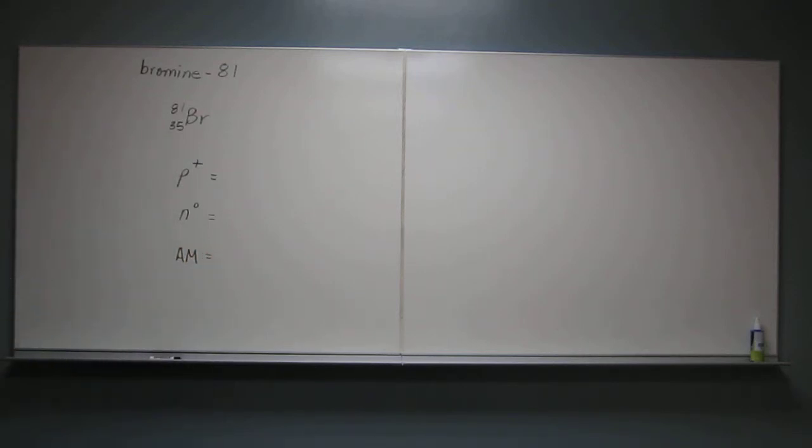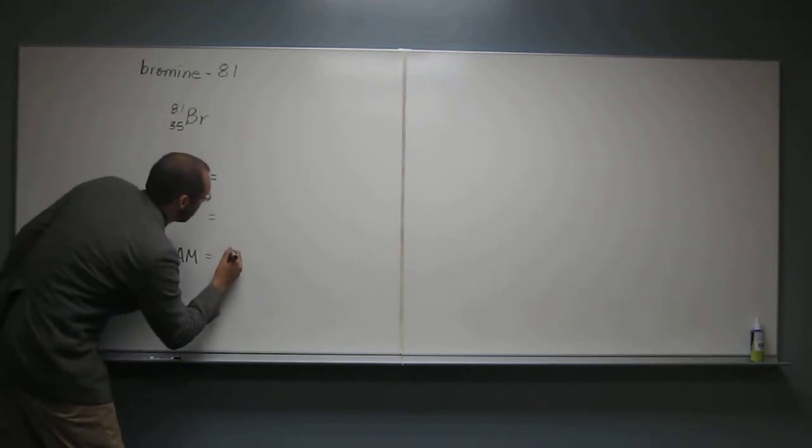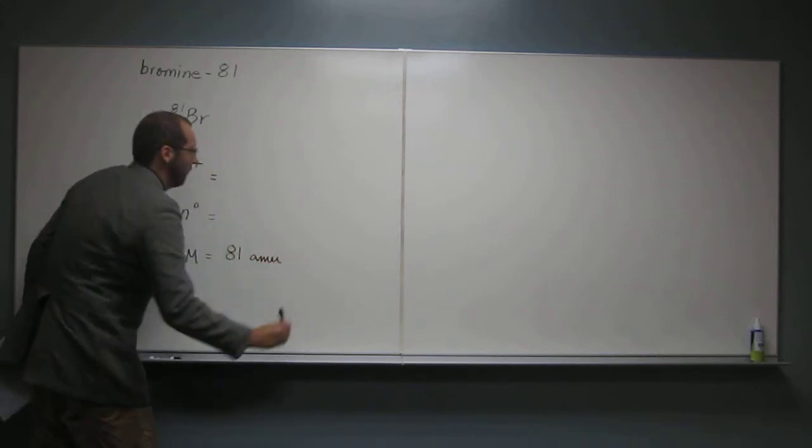So what is the atomic mass of bromine-81? 81. 81 amu. Remember you have to have a unit. If you don't have a unit, it doesn't make sense for the mass. So it's 81 amu.